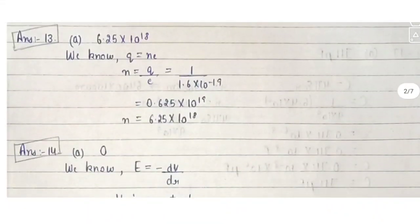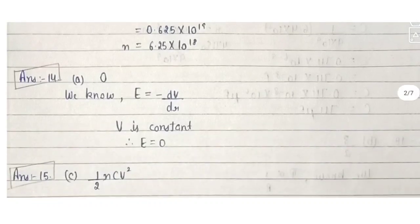Question 13 is most important but will not be explained here. Question 14: if electric potential is constant in a region, what can we say about the electric field?